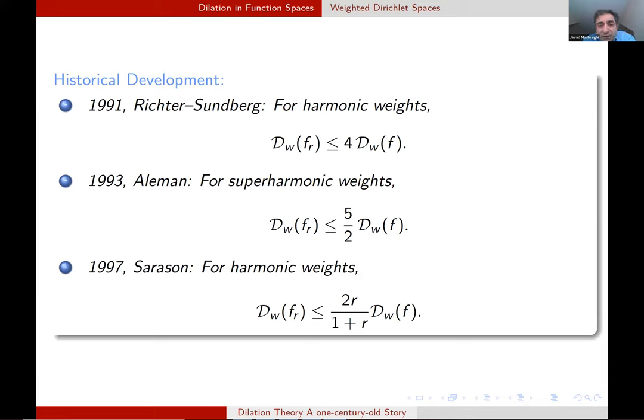Well, Richter and Sundberg for harmonic weights obtained this estimation with a constant 4 here. A bit later, Aleman extended to super harmonic weights with a better constant. In 97, Don Sarason, again, just for harmonic weights, obtained estimation like this. And this is good because this constant here is less than one. We will see why being less than one, less than or even equal to one is important. So this is the major breakthrough here.